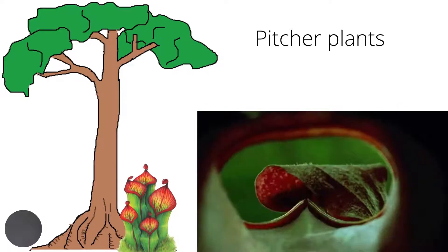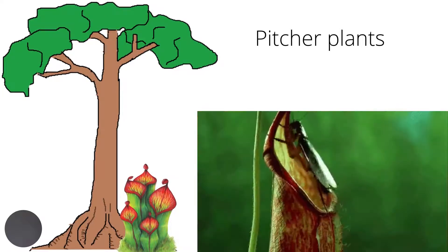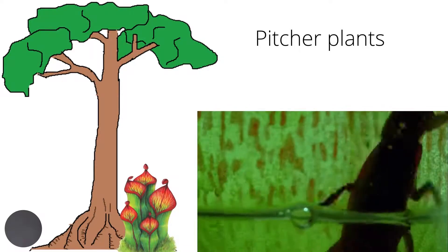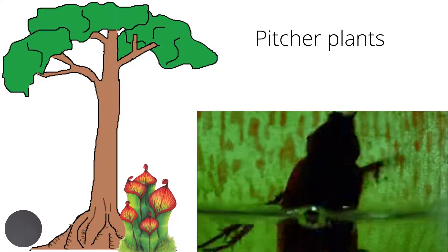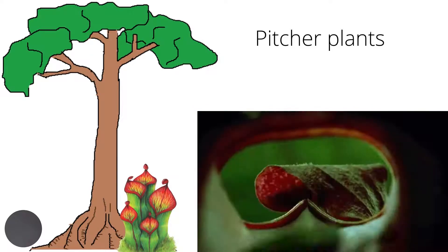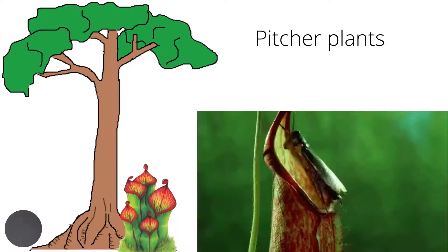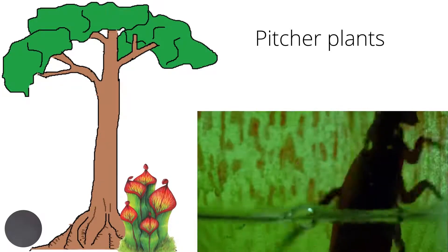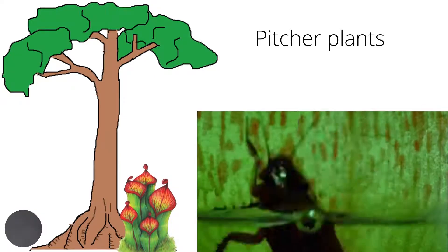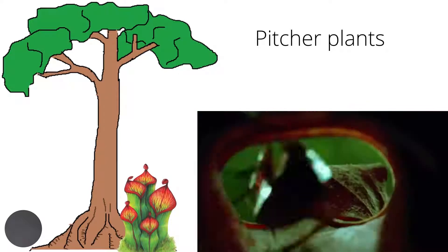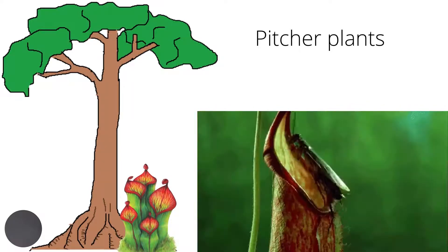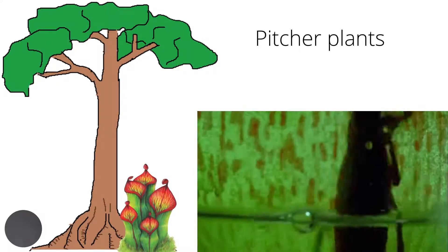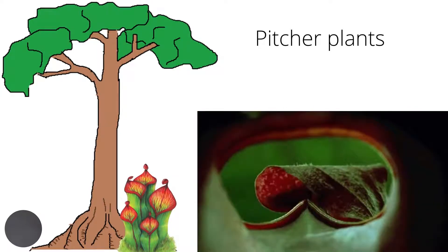Pitcher plants are carnivorous plants. They have modified leaves known as pitfall traps — a prey-trapping mechanism featuring a deep cavity filled with digestive liquid. The rim of the pitcher is slippery when moistened by condensation or nectar, causing flying or crawling insects to fall into the trap. The liquid in the pitcher will drown the insect, whose body will then become gradually dissolved.